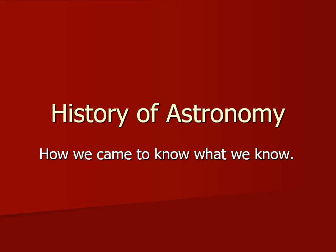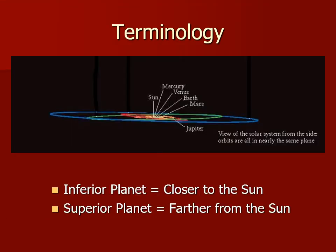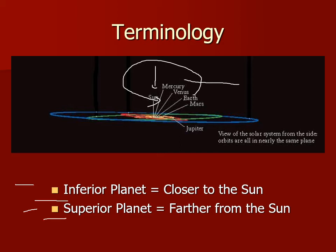The Copernican model of the solar system has the sun at the center and all the planets orbit around the sun. This is actually correct. He made the assumption that all the planets were in perfectly circular orbits — we know they're not — but this was still a major step forward. The terms 'inferior planet' and 'superior planet' don't mean not as good or better. Inferior means closer to the sun, and superior means farther from the sun.